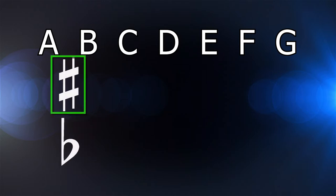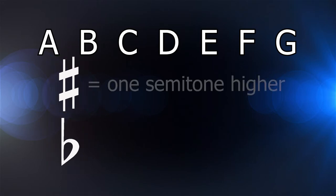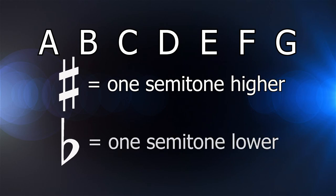The hashtag-like symbol is a symbol for sharp, and the B-shaped symbol is a symbol for flat. A sharp note is one semitone higher than its base note, and a flat note is one semitone lower than its base note.